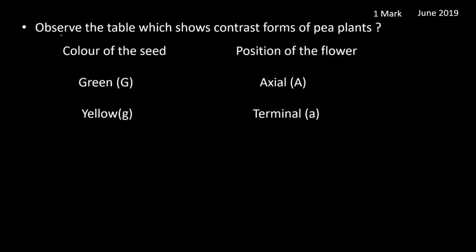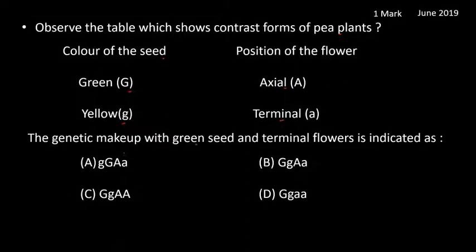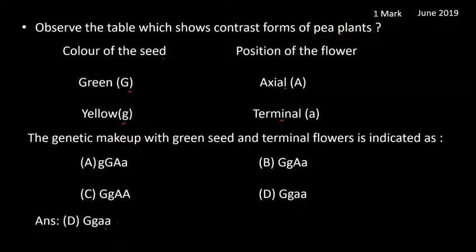Next is a multiple choice question. Observe the table showing contrasting forms of pea plants: color of seed — green and yellow; position of the flower — axial and terminal. The genetic makeup representing green seed and terminal flowers is indicated as option D, which is the correct answer.